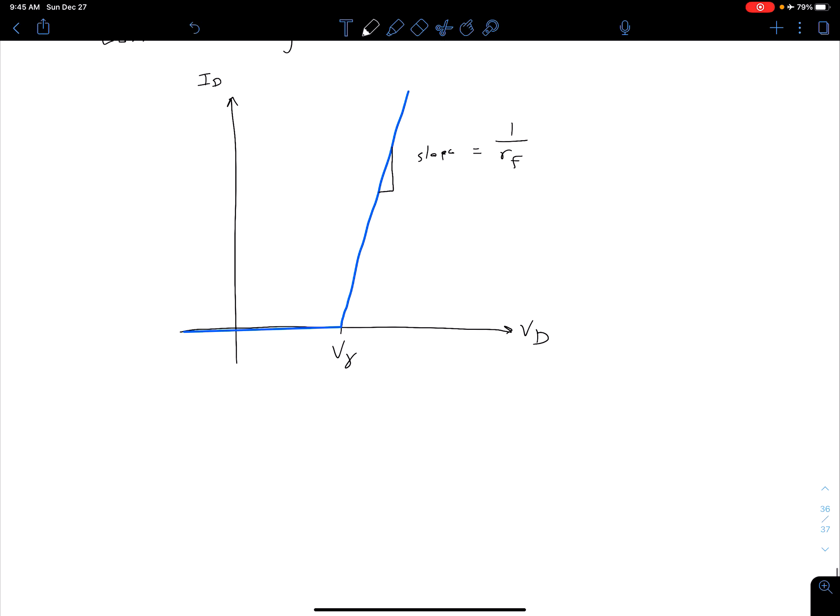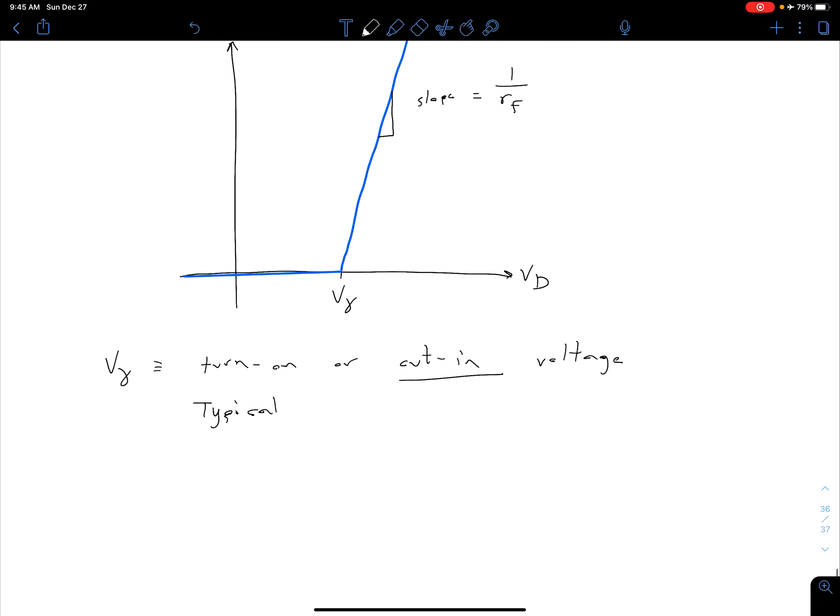So let me define these two new terms, this V gamma and this R sub F. So our V gamma is our turn-on or our cut-in voltage. Usually I'll refer to this as a cut-in voltage. And so this is another thing that will be specified on data sheets. Typical values of this, like we saw in a previous video, it's going to be a little less than a volt. So for silicon devices, PN junction diodes, it's going to be about 0.6 to 0.7 volts. Again, there is dependence on material, some slight dependence on temperature and other factors similar to that.